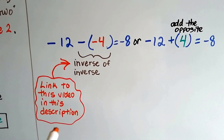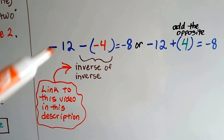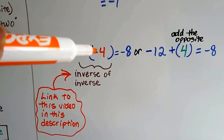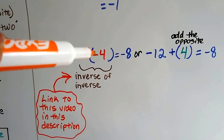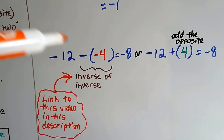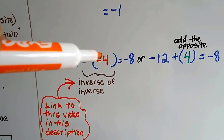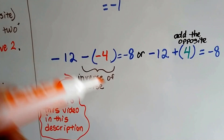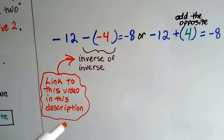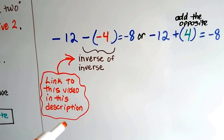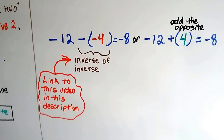If you don't know what the inverse of an inverse is — instead of saying negative, we say this is the additive inverse of. So this is the additive inverse of a negative 4, which is going to be a positive 4. You can see a link to the inverse of inverse video in the description of this video.